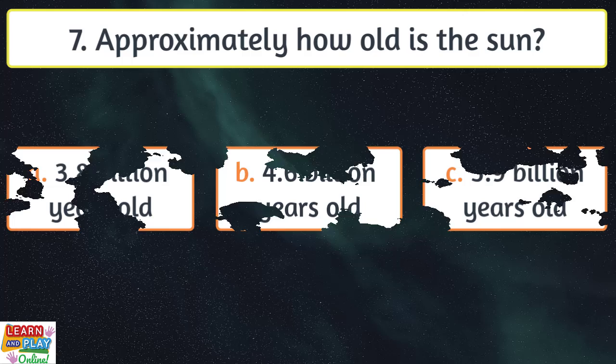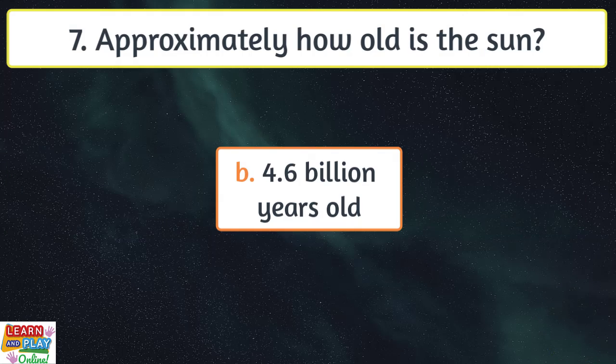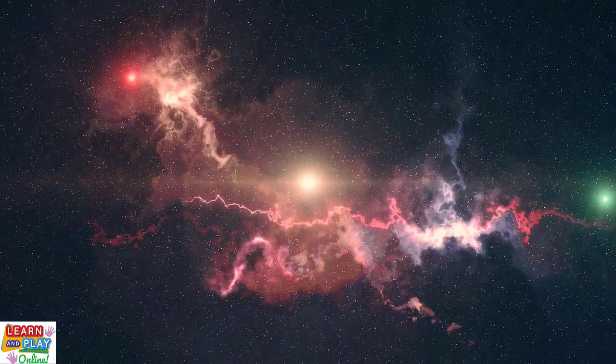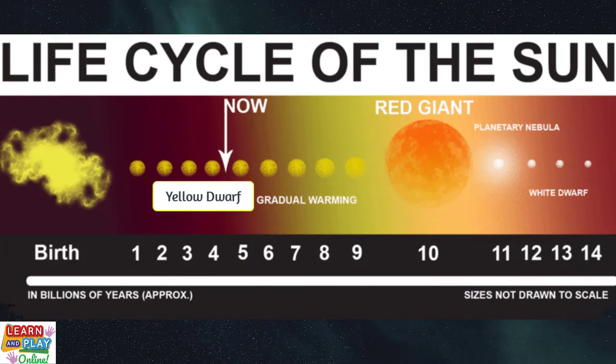Question seven. Approximately how old is the sun? 4.6 billion years old. According to scientists, the sun was born around 4.6 billion years ago, and it is currently at its halfway point in its life cycle. It is now classified as a yellow dwarf.